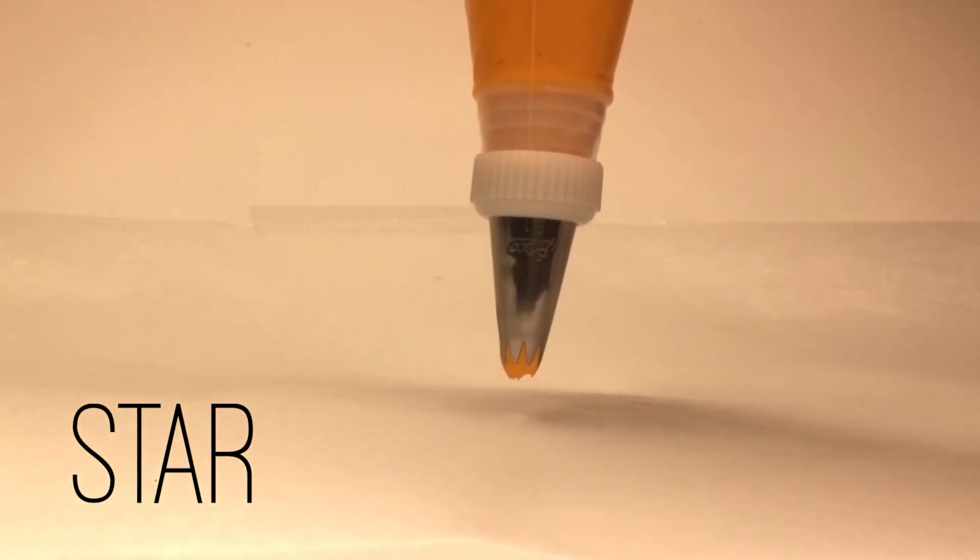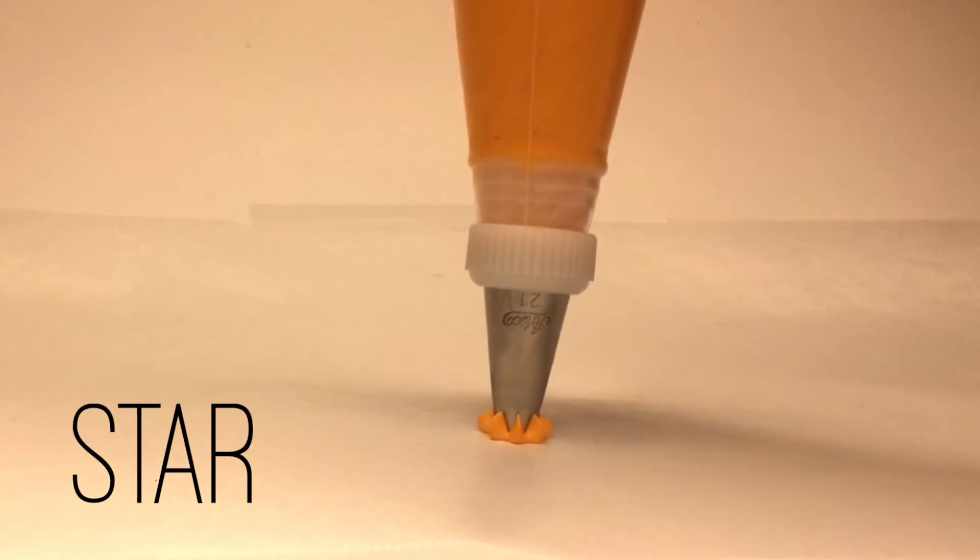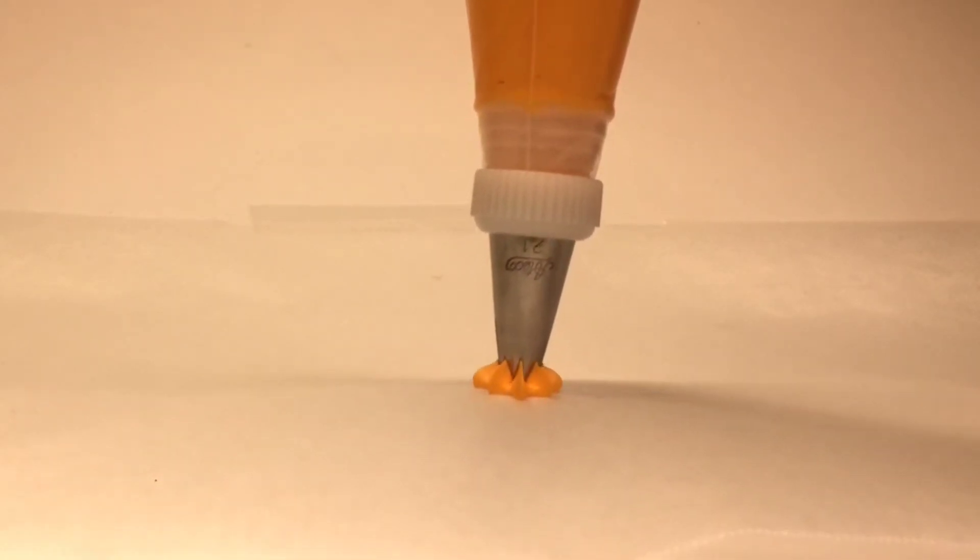Our very first technique is the star. You see here we're going to hold our bag vertically and we're going to lightly touch the surface and we're going to squeeze while keeping our tip down. We stop completely and then lift straight up.